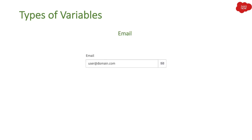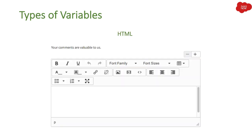Then we have Email. If you want users to fill in an email address, you can use the Email variable. Then we have HTML — if you want users to provide input in HTML format, such as filling in a knowledge article body, you can utilize the HTML variable.